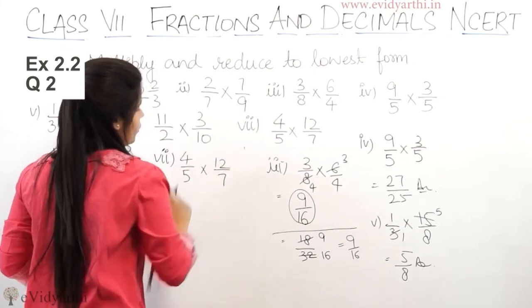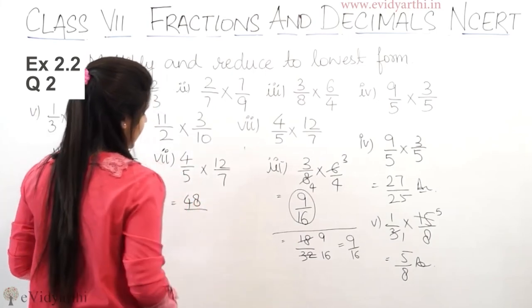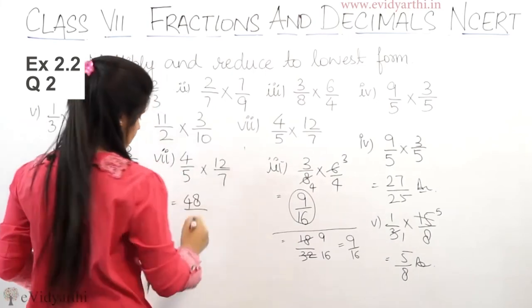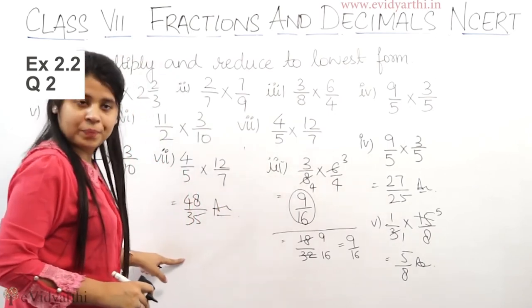And 2 into 10 is 20. So we will multiply. 12 into 4 is 48, 5 into 7 is 35. So the answer is 48 upon 35.